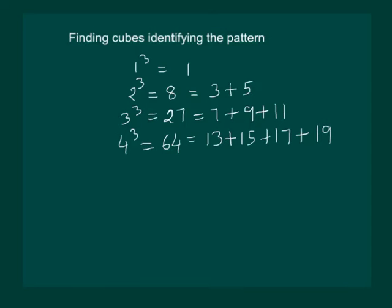In 3 cube, we are starting with the odd number after 5. That is 7. And then, next number is 9, and next odd number is 11.